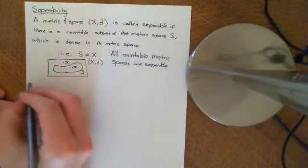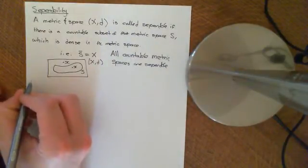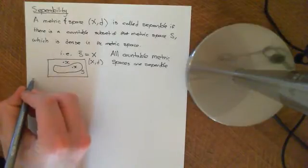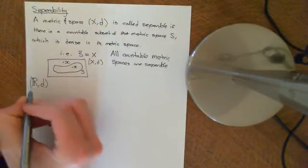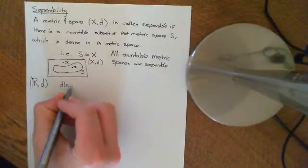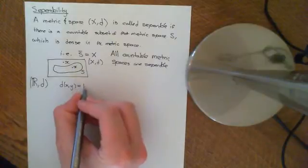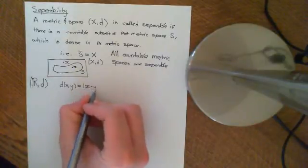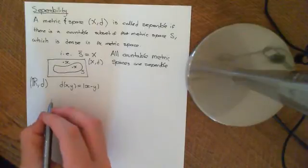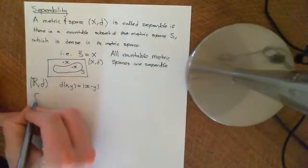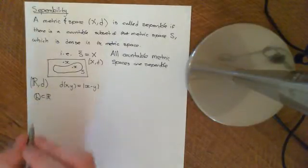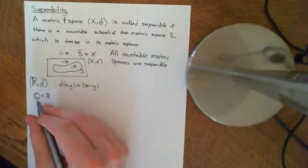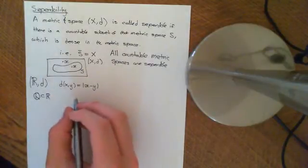Now let's look at some less trivial examples. The first key example is the real numbers and the rational numbers. If you take your metric space to equal the real numbers with the usual Euclidean metric — so we'll define the distance between X and Y in the real line to be equal to the absolute value of X minus Y — and if you then take as a subset the rational numbers, which is certainly a proper subset of the real line, then this is a countable subset of the real line which is indeed dense within the real line.